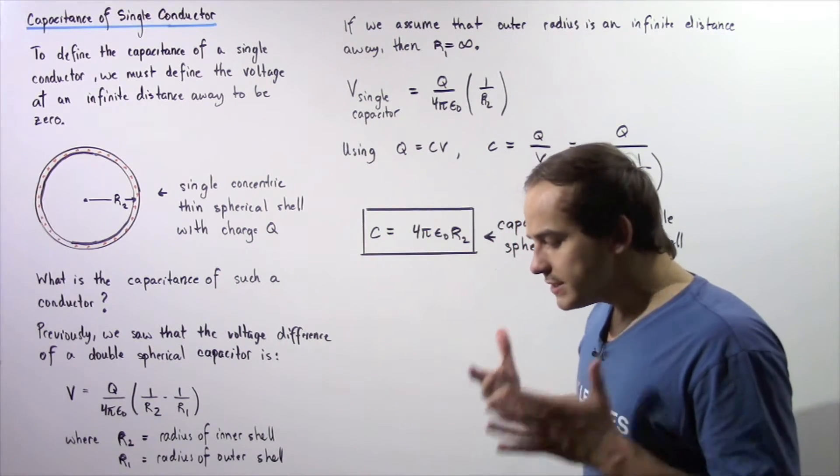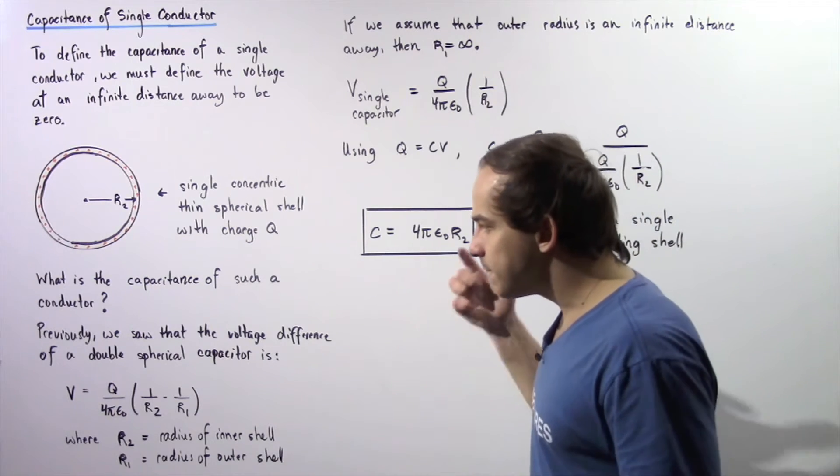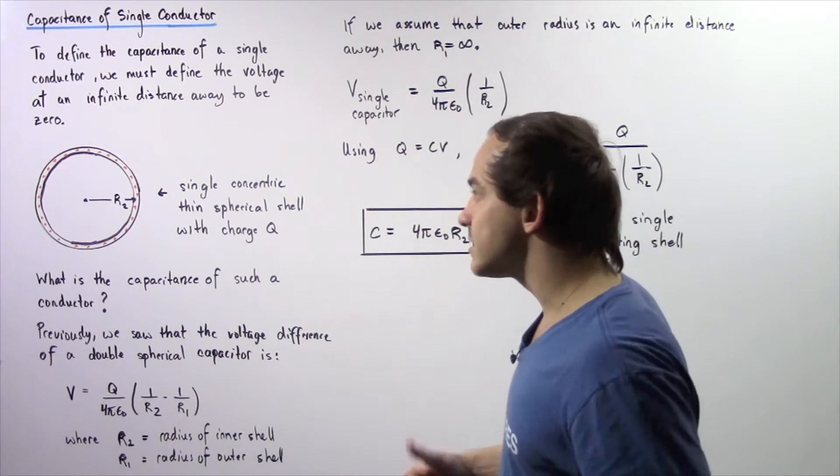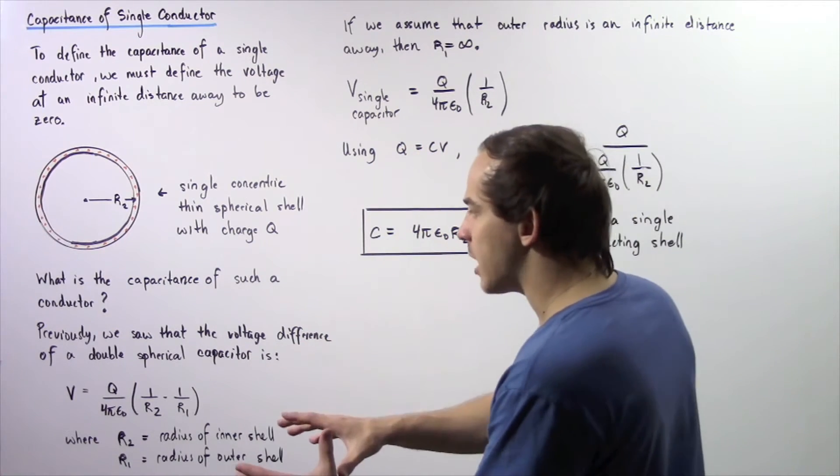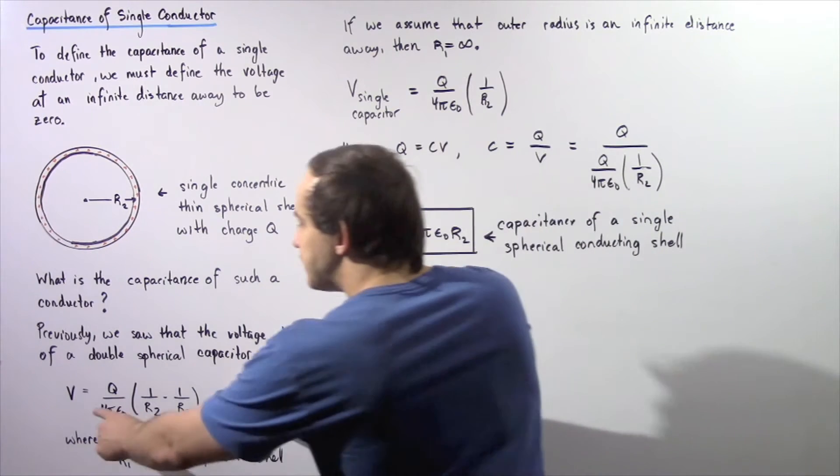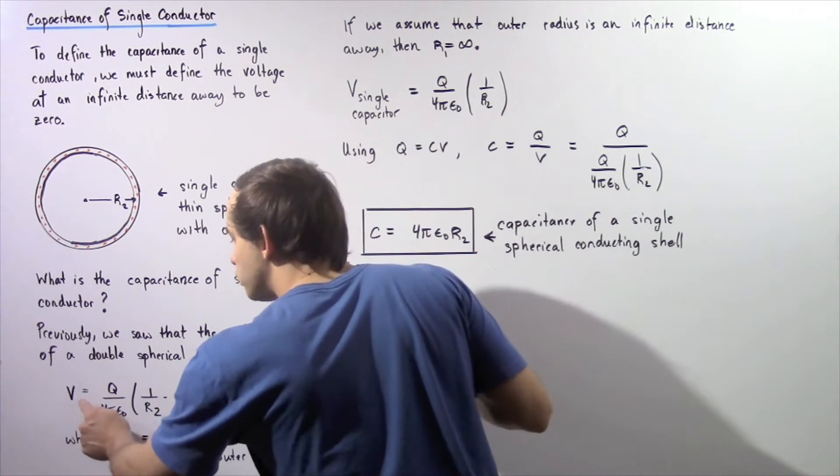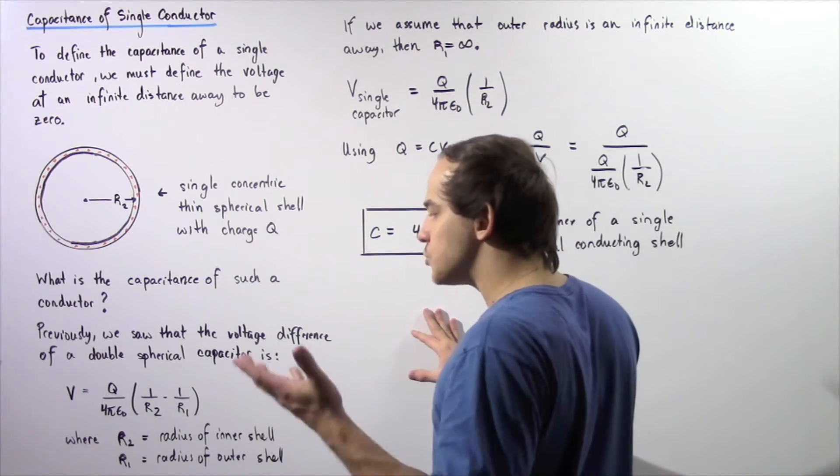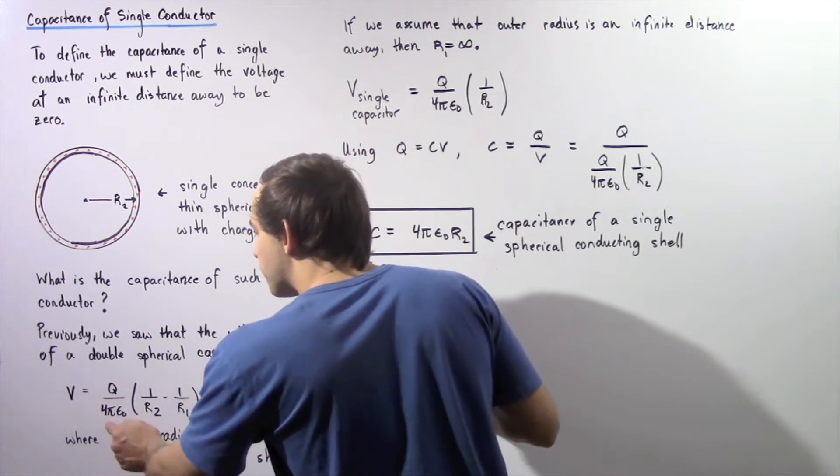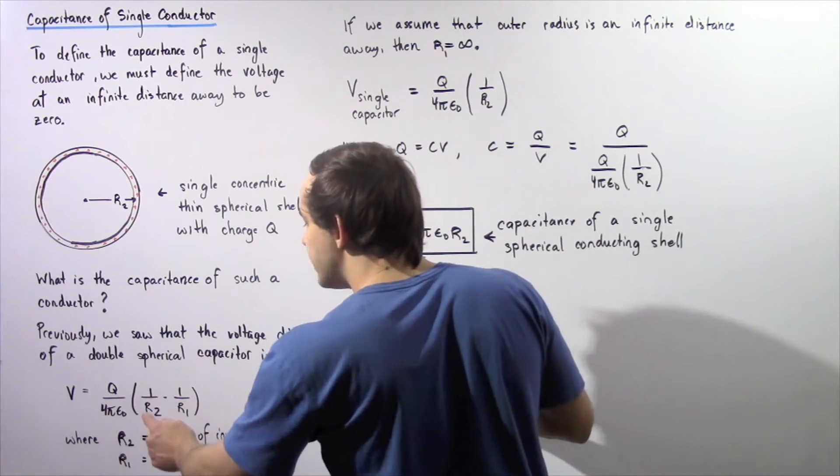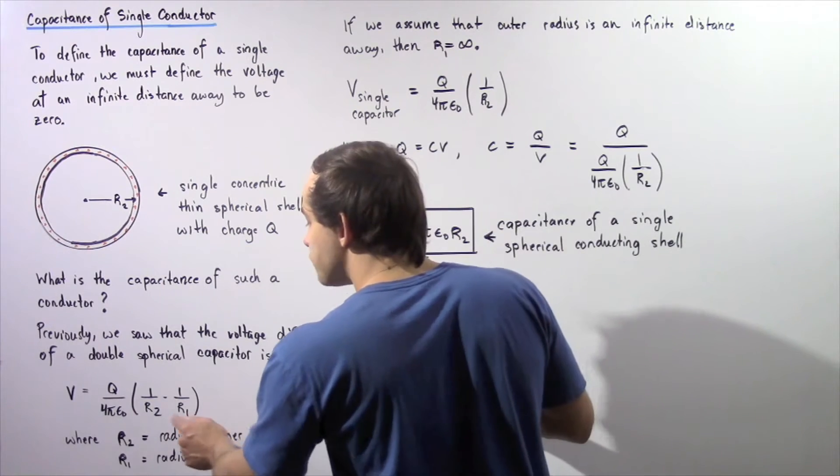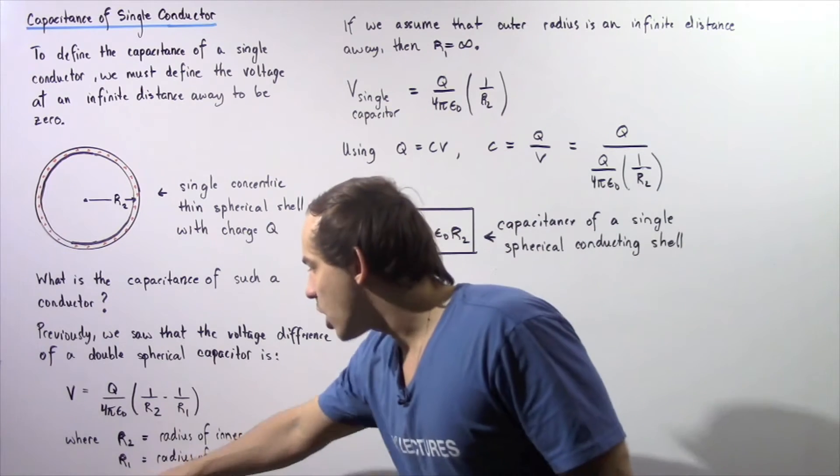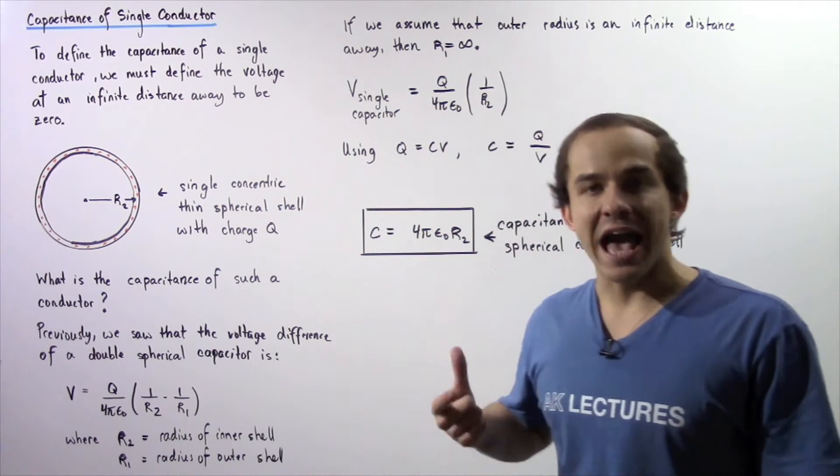In the previous lecture, we were able to show that the voltage difference of a double spherical capacitor that consists of two spherical shells, an inner shell and an outer shell, is given by the following equation. The voltage is equal to q, the quantity of charge on either one of those shells, divided by 4π ε₀ multiplied by 1/R2 minus 1/R1, where R2 is the radius of the inner shell and R1 was the radius of the outer shell.